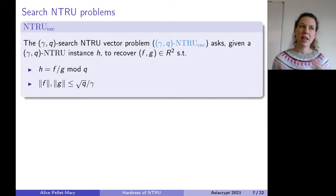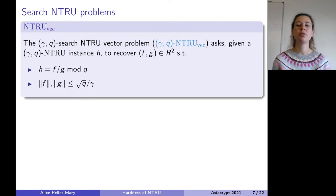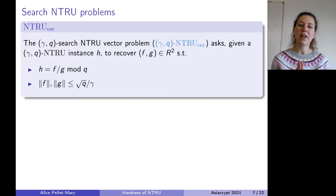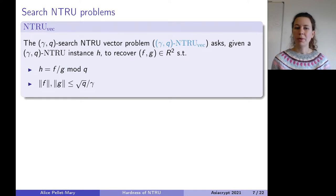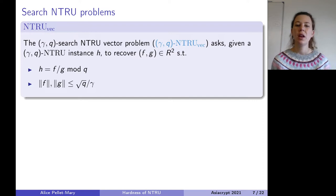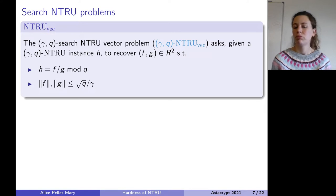The search problem is a bit more tricky. The most natural search variant you would define is what we call the NTRU vector problem: you're given some H which is an NTRU instance, meaning H can be written as F over G mod Q for some small F and G, and you are asked to recover a trapdoor — another pair F, G such that F and G are small and H equals F over G.